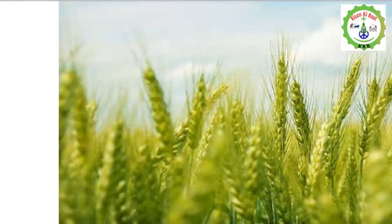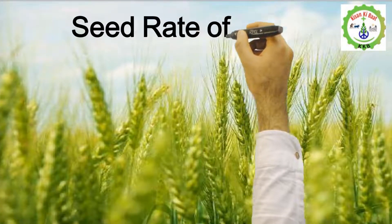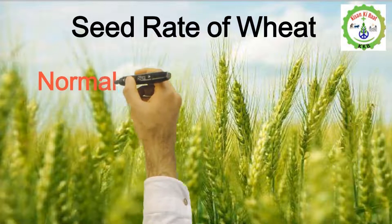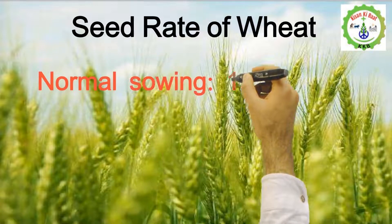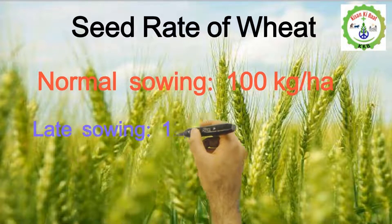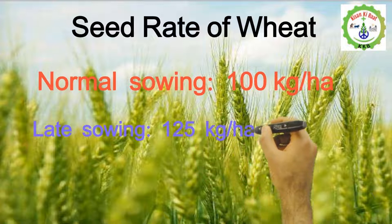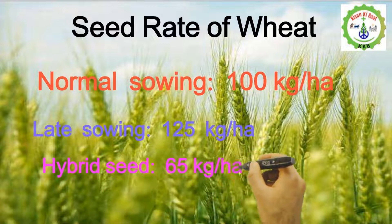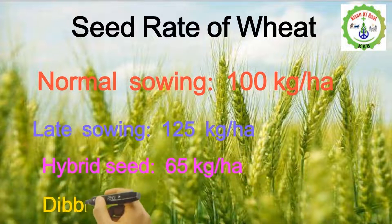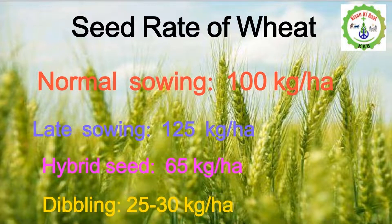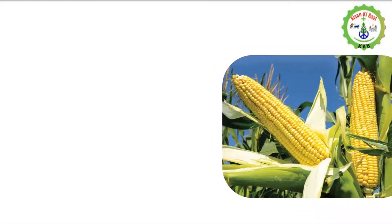Seed rate of wheat: for normal sowing — 100 kilograms per hectare; for late sowing — 125 kilograms per hectare; for hybrid seed — 65 kilograms per hectare; by dibbling method — 25 to 30 kilograms per hectare.